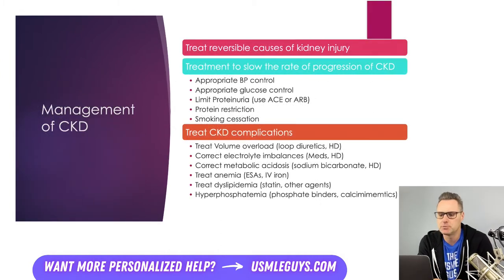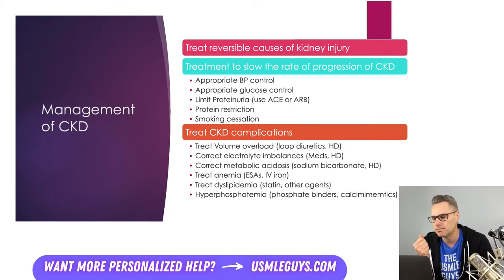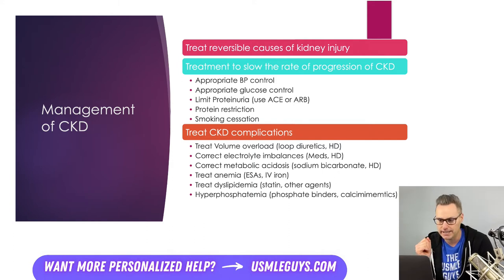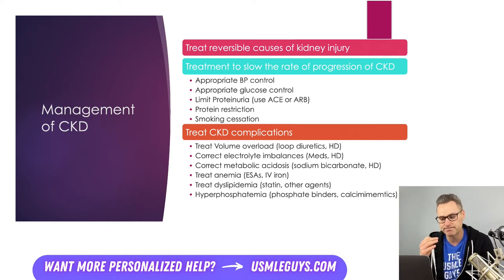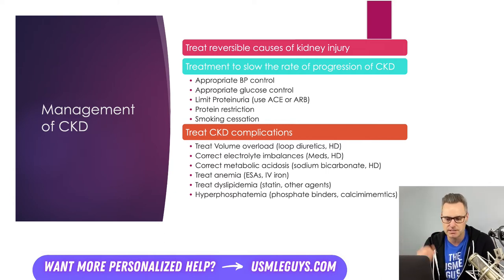When it comes to management, the first step is to treat reversible causes of kidney injury — stop nephrotoxic drugs, correct hypovolemia, relieve any obstruction. Whatever the appropriate treatment is for that individual's cause of CKD, work on treating it if it's reversible. Once that's done, initiate strategies that will slow the progression of CKD. Lastly, treat complications that have arisen or are likely to arise, including things like volume overload, electrolyte imbalances, and metabolic disturbances.